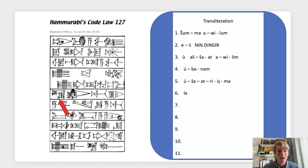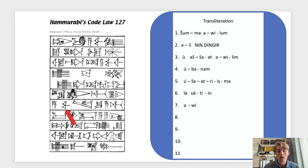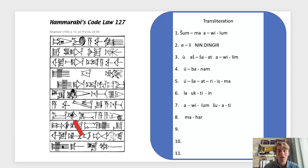Line six: La, Uk, Ti, In. Line seven: Ah, We, Lim, Shu, Ah, Ti. Then on line eight: Ma, Har, Da, Ah, Ah, Ni.